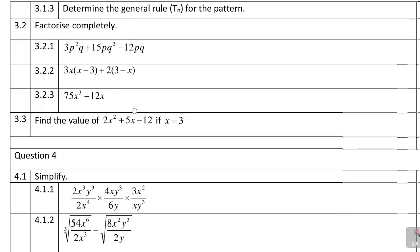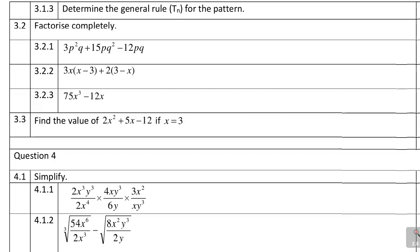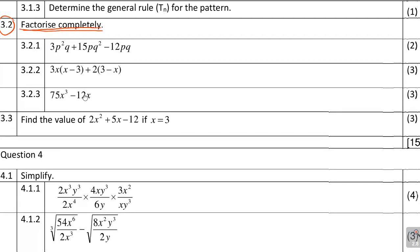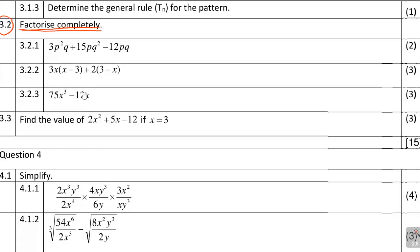You can see that algebra actually begins in question 3.2 of that paper. It says 3.2: you need to factorize completely. Whenever you're dealing with questions like factorizing, you must know that this section deals with algebra. Also, the mark allocations are important because they help you see the amount of work necessary for that particular paper.